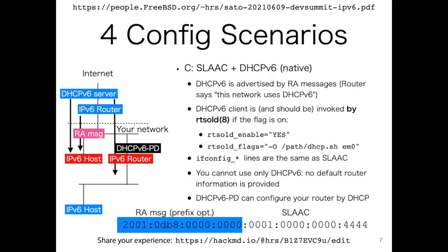DHCPv6 has the capability to configure the IPv6 router — this is called DHCPv6 PD, prefix delegation. One arrow goes from the DHCPv6 server to the host, and another goes to the IPv6 router. The internal network prefix can be configured using DHCPv6. This is a popular way to use DHCPv6 to configure your IPv6 router. It is not so common to use DHCPv6 for host configuration.